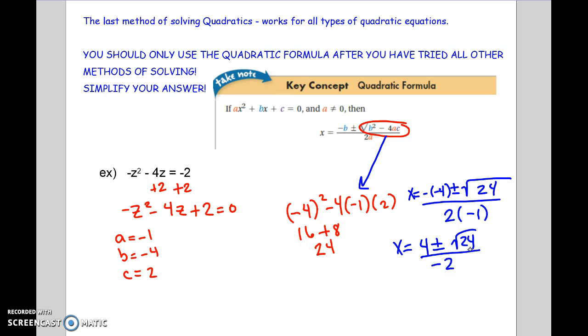Square root of 24, I can break down. 24, 4 and 6, 2 and 2, 2 and 3. So I have a pair of 2s that comes out. So x equals 4 plus or minus the 2 that came out and the 6 that stays on the inside all over negative 2.